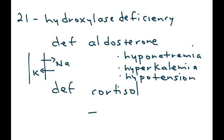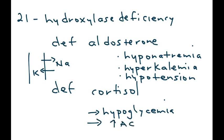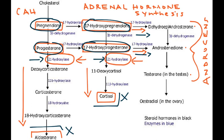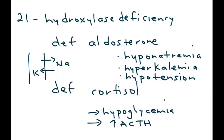If cortisol is deficient, the patient will have hypoglycemia. Due to lack of negative feedback, ACTH will be increased. As shown in the diagram, precursors build up and are shunted into the androgen pathway, producing three androgens in excess.